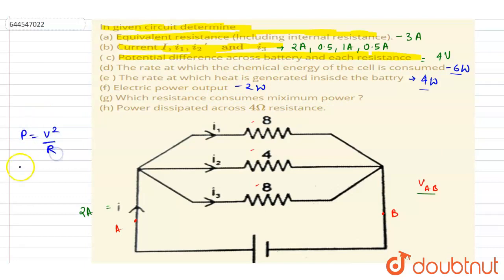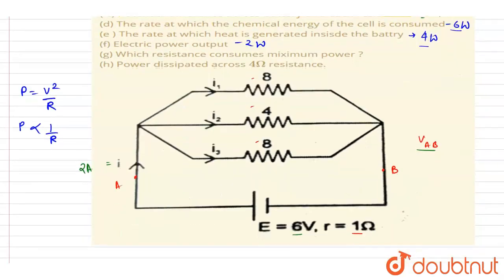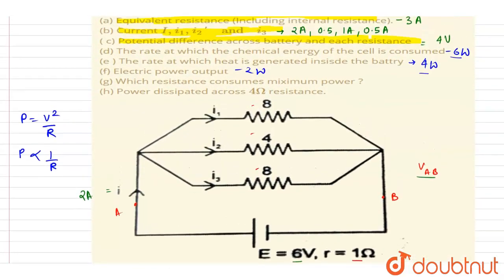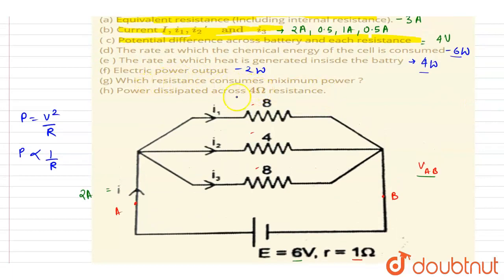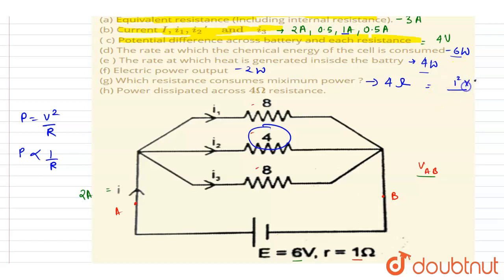Now, which resistance consumes maximum power? Since the potential difference across each parallel resistor is the same, power consumption is inversely related to resistance. The resistor with the least resistance consumes the most power. That is the 4-ohm resistor. The current through it is i2 = 1 A, so power = 1² × 4 = 4 watts.